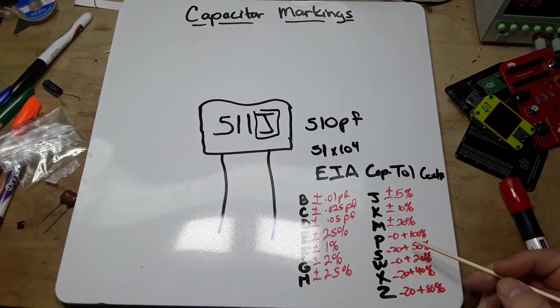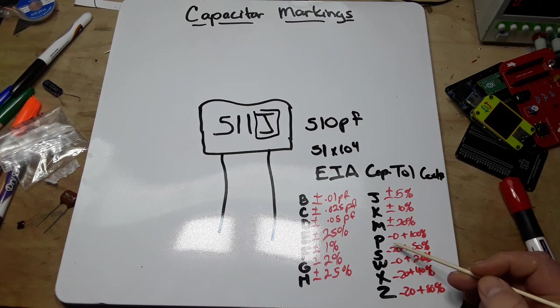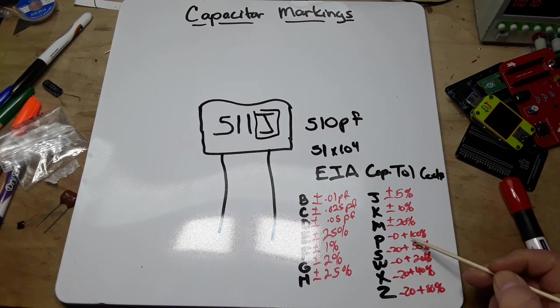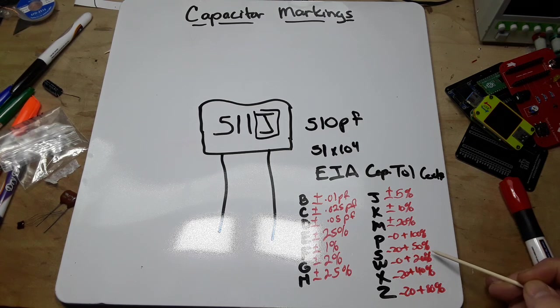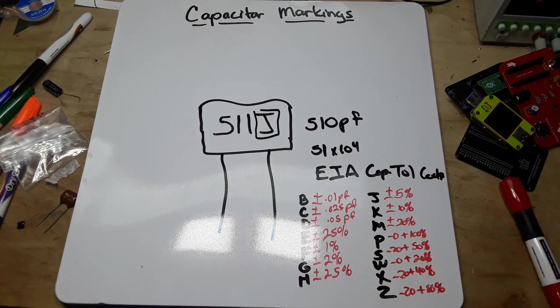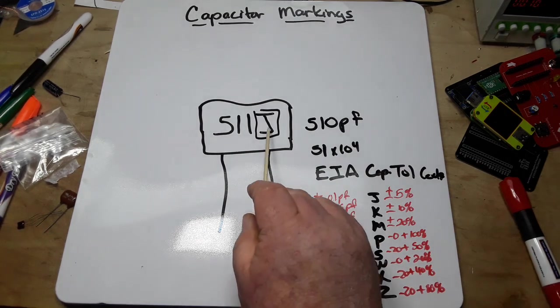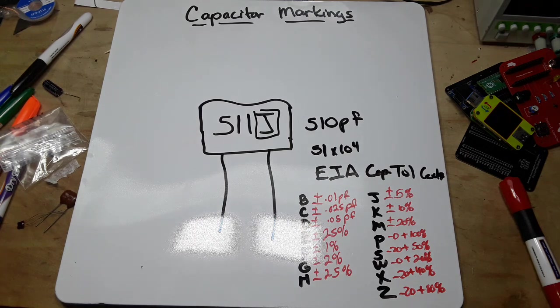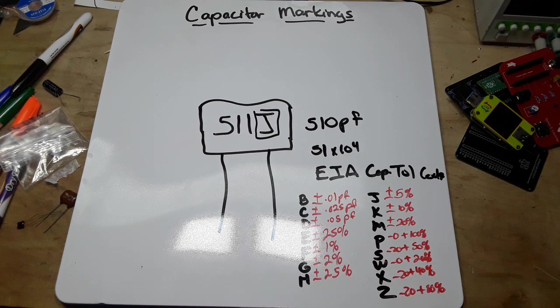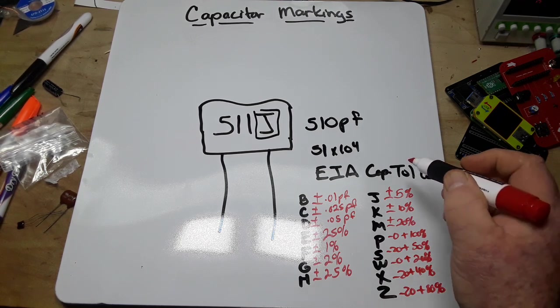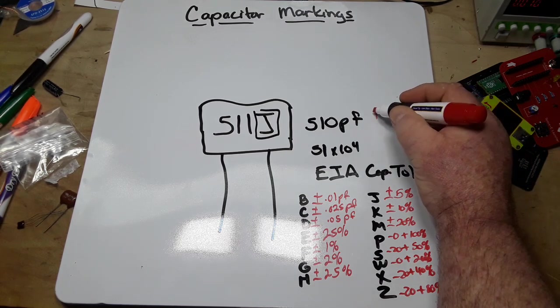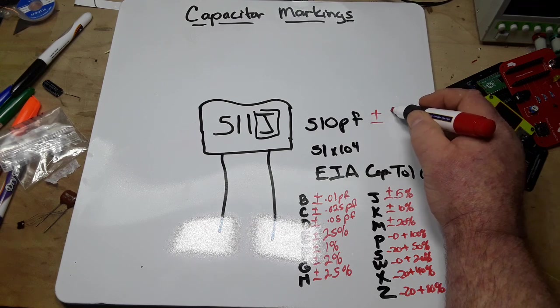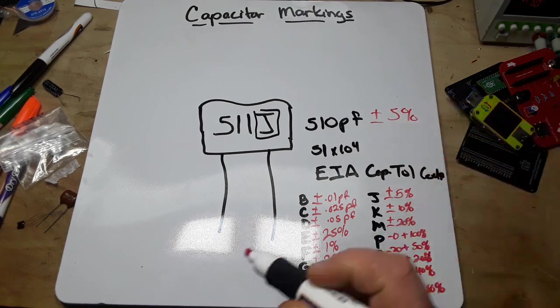Where there's another cutoff. Then we have P which is minus 0% to plus 100%, Z is minus 20% to plus 80%. So those are your EIA capacitor tolerance codes, and that tells you what that particular letter is. So that J means this capacitor is 510 picofarad plus or minus 5%.